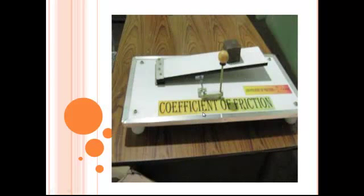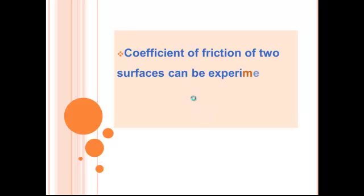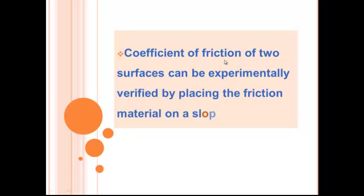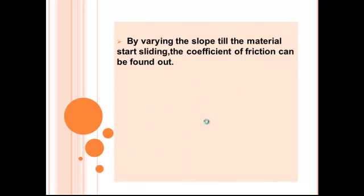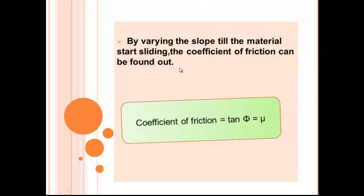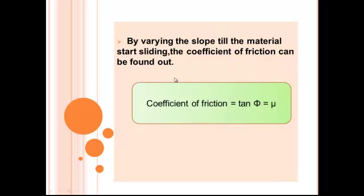Coefficient of Friction. Coefficient of friction of two surfaces can be experimentally verified by placing the friction material on a slope. By varying the slope till the material starts sliding, the coefficient of friction can be found. Coefficient of friction is equal to tan theta equal to mu.